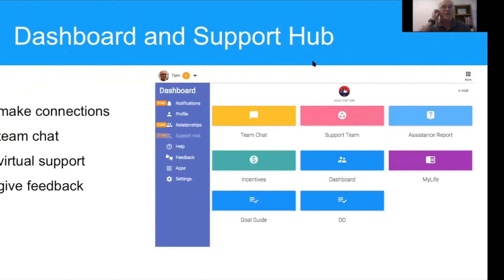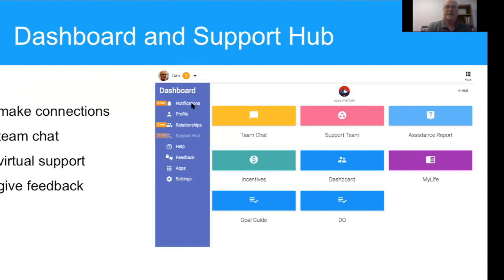I'm going to run through some overview slides to establish some concepts and then we'll dive in. This is what the dashboard looks like when you log into Cognitopia. These are the basic tools you use. What we're looking at right now is something called Support Hub. There are notifications from people you're connected with on Cognitopia — it's very much a connected, team-oriented approach to self-management. There's a way to build those teams, ask for help and get feedback, and some simple settings like turning text-to-speech on or off.